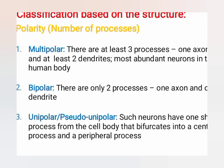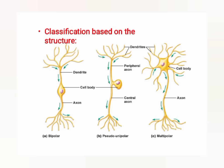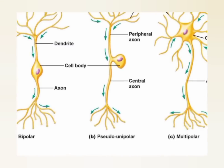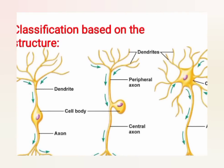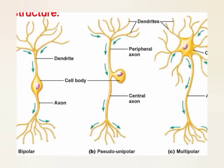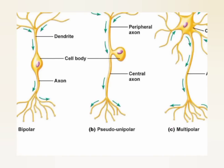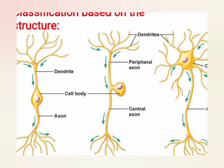Unipolar neurons have one short process from the cell body that bifurcates into a central process and a peripheral process. Here is the neuron classified based on structure: bipolar neurons have the cell body in the middle; pseudounipolar neurons have different dendrites and a central axon with the cell body to the side; multipolar neurons have the cell body near the dendrites.